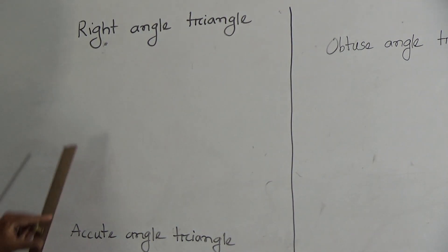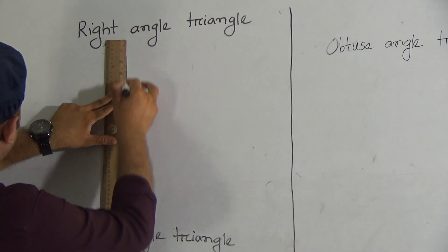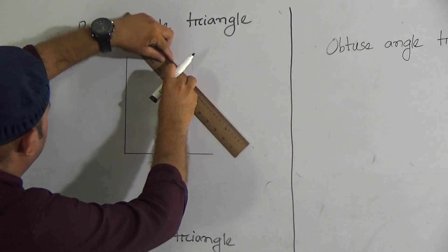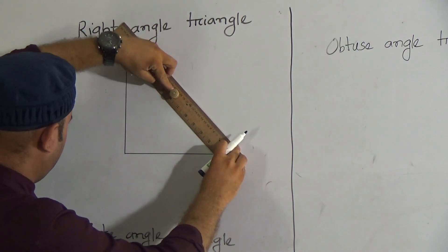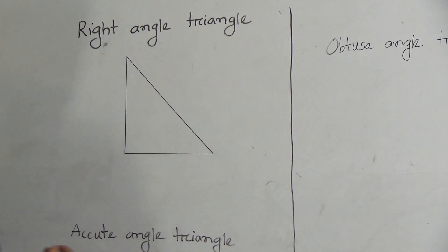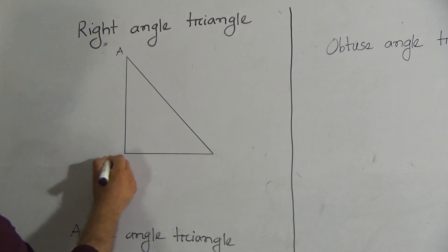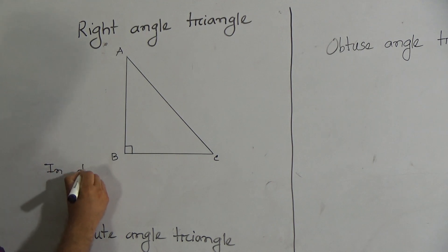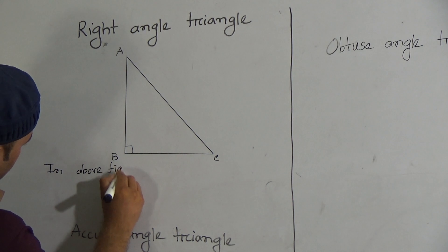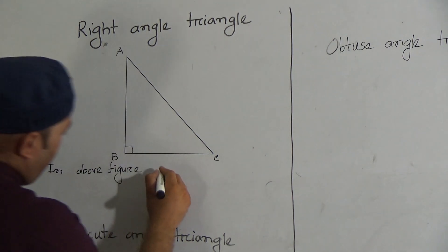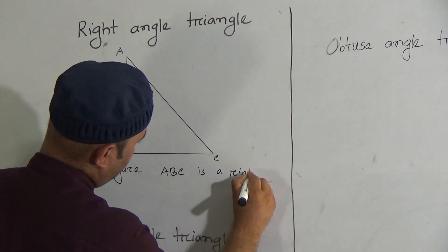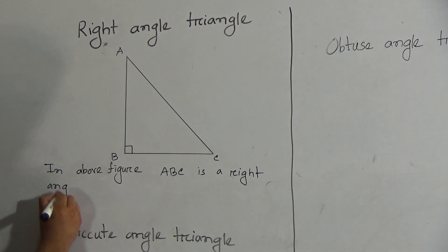Look here. First one is right angle triangle. You have to draw a right angle triangle like this way. Look here, this is a right angle triangle and you have to denote here as A, B, and C. In above figure, ABC is a right angle triangle.